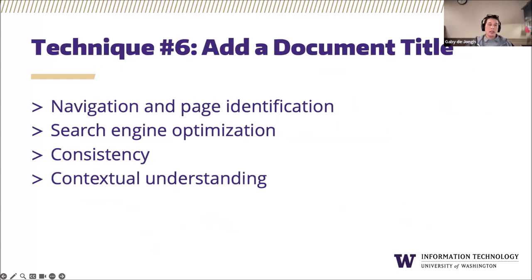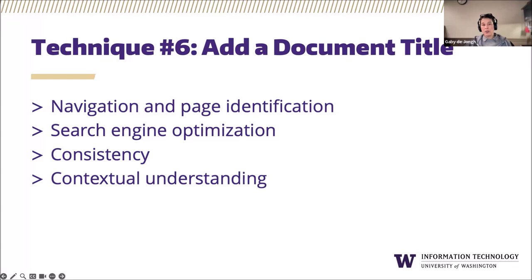Technique number six: add a document title. Document titles are typically the first content announced by a screen reader when a new electronic document is loaded. Adding document properties allows screen reader users to get more information about the slide deck without needing to open it. A document title provides users with a clear and concise way to identify the content and purpose of the slide deck, saving time by limiting the need to open it and browse through slides to find what they're looking for.